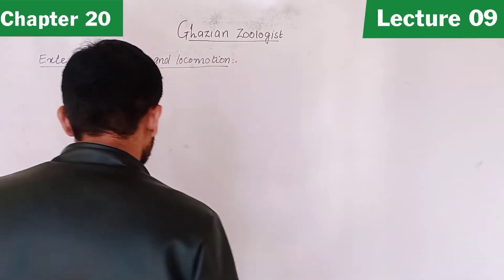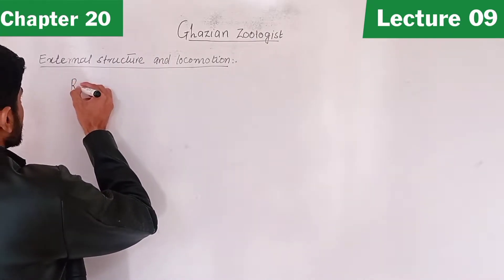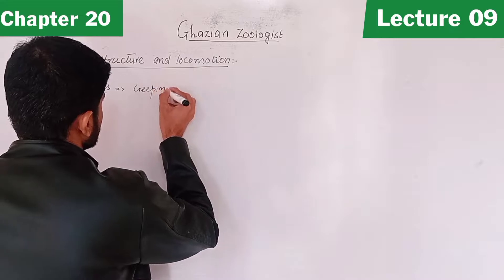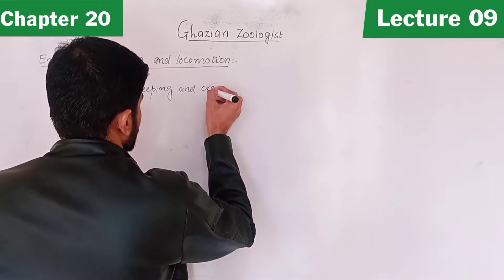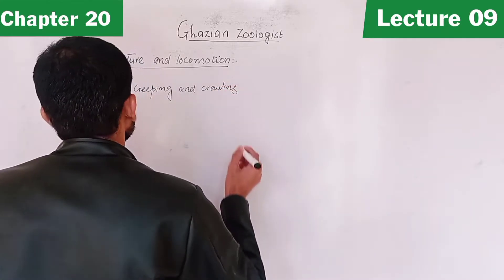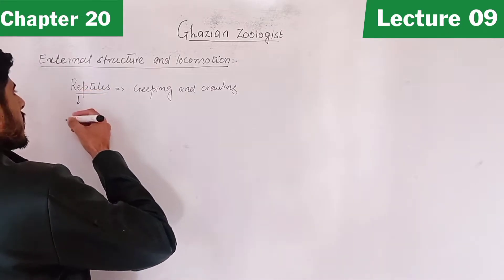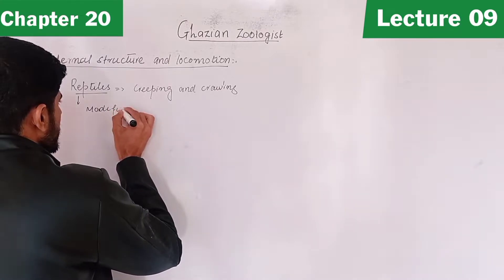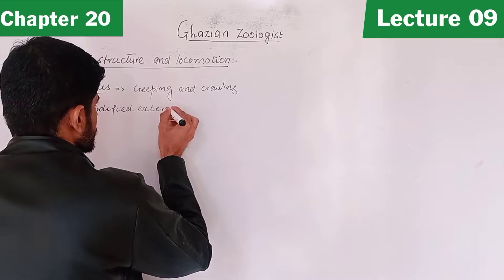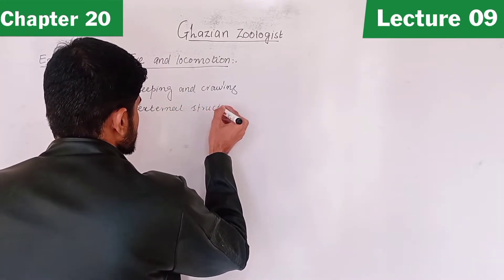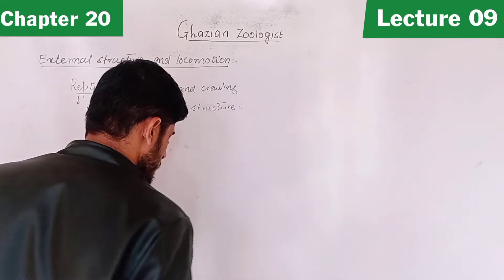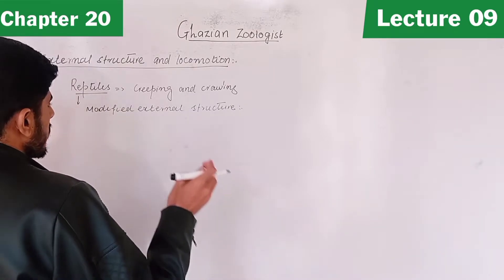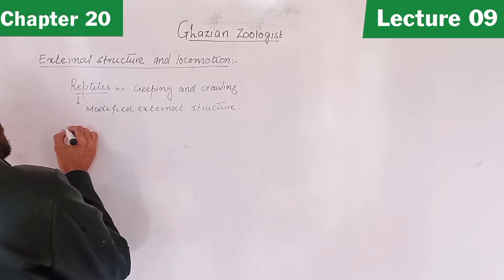You know about reptiles — they are creeping and crawling animals. Reptiles have a modified external structure because if we talk about amphibians, they live in water and land both, but reptiles mostly survive on land. That's why there are a lot of adaptations present in them, such as thick skin.